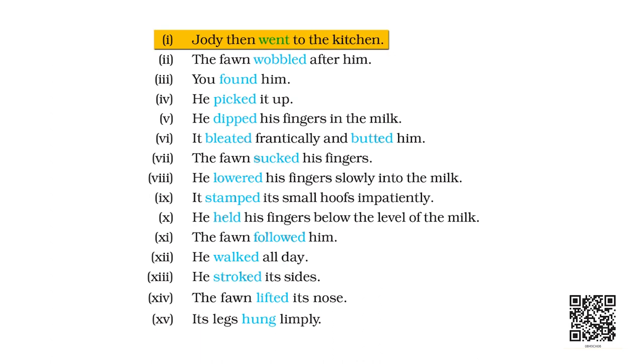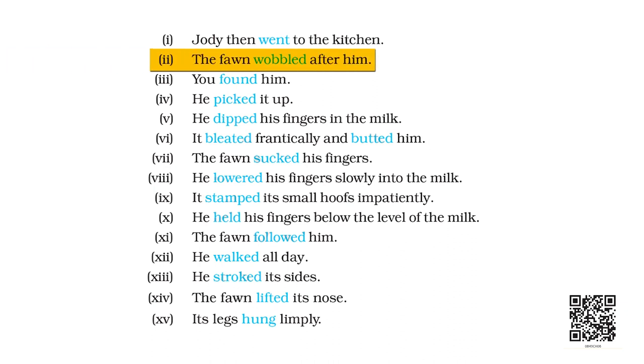Now let's look at the sentences and find which verbs are transitive and which are intransitive. Sentence 1: 'Jody then went to the kitchen.' Ask: went what? The answer 'to the kitchen' tells us where, not what — so it is intransitive. Sentence 2: 'The fawn wobbled after him.' Ask: wobbled what? No answer — intransitive. Sentence 3: 'You found him.' Ask: found what? Answer — 'him.' There is an object, so the verb is transitive.